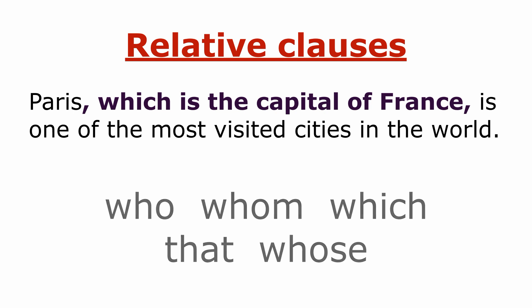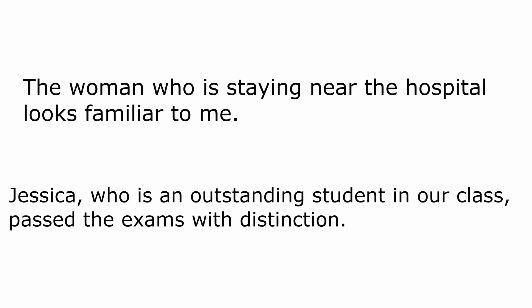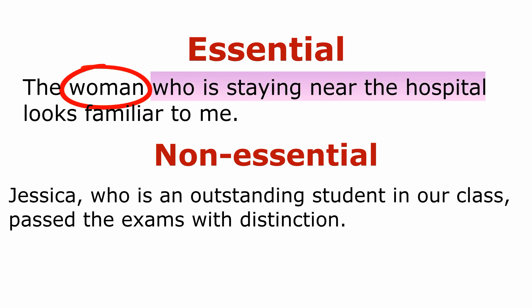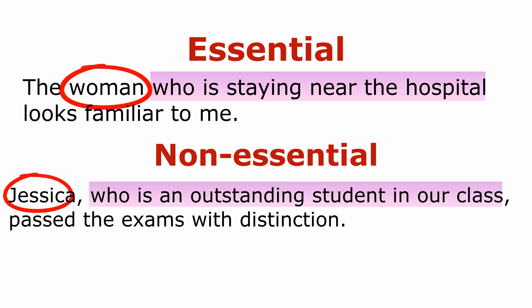Relative clauses are written by means of relative pronouns. Be careful — sometimes you need to place commas, sometimes not. It's up to the meaning of the sentence. If a relative clause just gives extra explanation, you need a comma — this relative clause is called non-essential or non-restrictive. But if it's an essential clause, there is no need for a comma. For example: 'The woman who is staying near the hospital looks familiar to me' — no comma, essential. 'Jessica, who is an outstanding student in our class, passed the exam with distinction' — commas used, non-essential, just extra information. We don't know the woman in the first sentence, so the relative clause is essential to describe her. In the second sentence, we just give extra information about Jessica, and if we remove that part, the sentence is still meaningful.